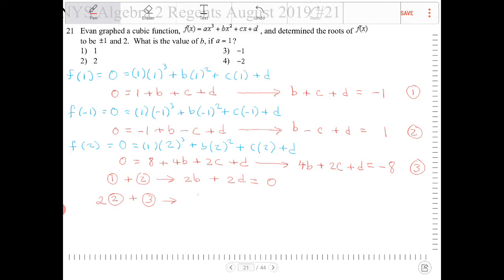So, that's 2b plus 4b, I get 6b. 2 times negative c, that's negative 2c. Negative 2c plus 2c, well, that's 0. And then, I have 2 times d plus d, I get 3d, plus 3d, equals 2 times 1 plus negative 8, that's negative 6.